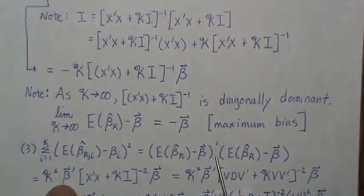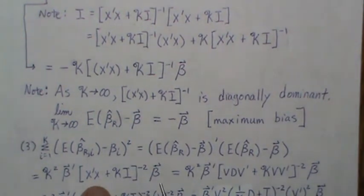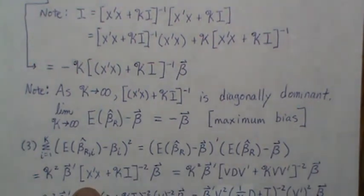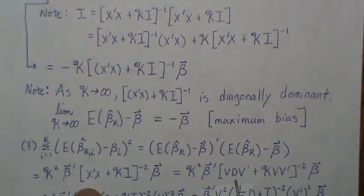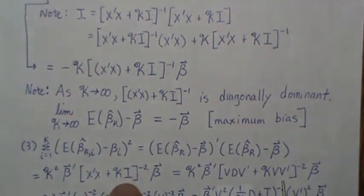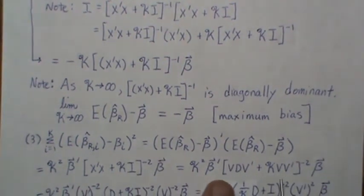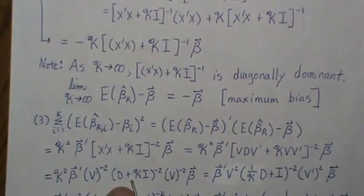We write the spectral decomposition of X transpose X — I have a video called spectral decomposition, and we also go into more detail in part one. We write it as VDV' where V contains the orthonormal eigenvectors and D is a diagonal matrix of the eigenvalues. We then left-factor out V and right-factor out V transpose, and distribute to get this expression.